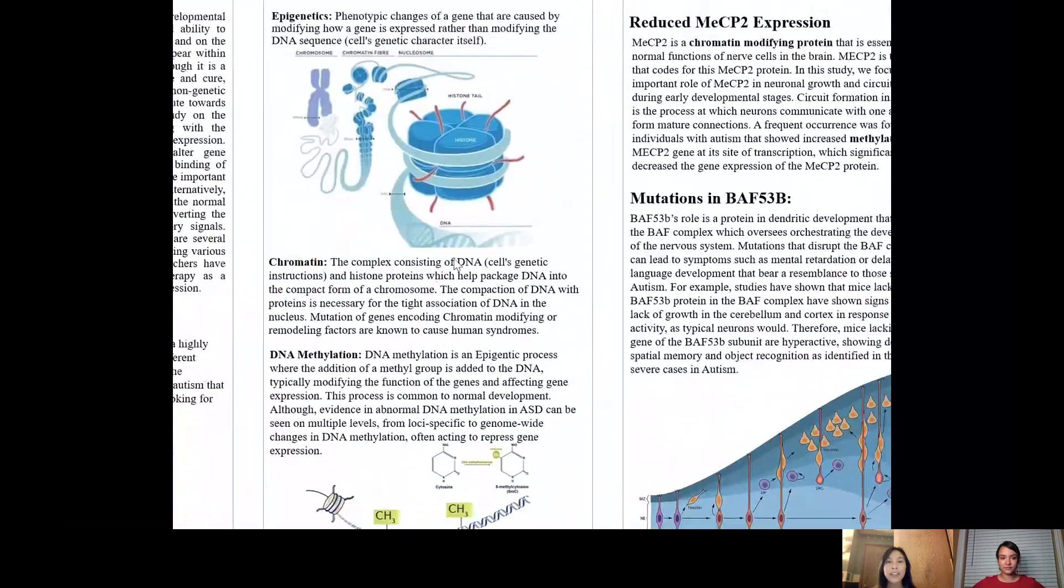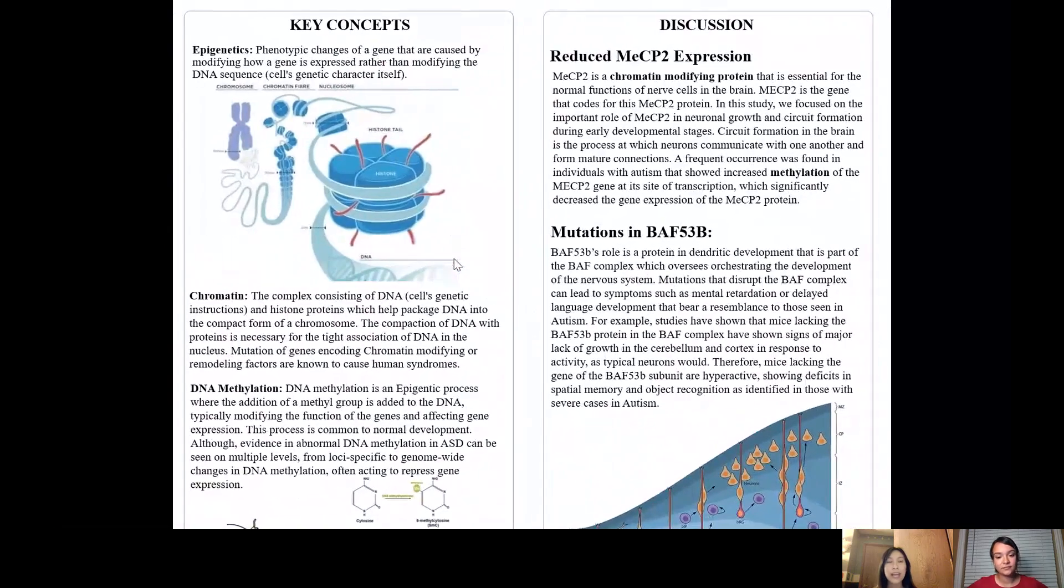And the first study that we analyzed was with the MeCP2 protein. And MeCP2 is a chromatin-modifying protein that is present throughout the entire body, but is especially abundant in the brain.